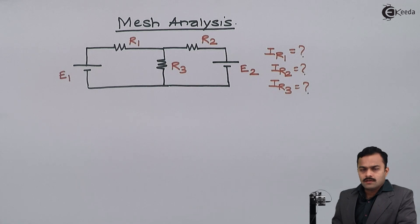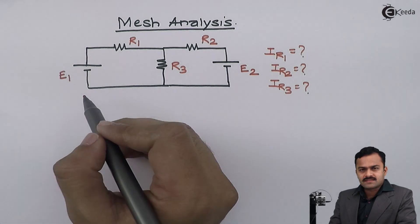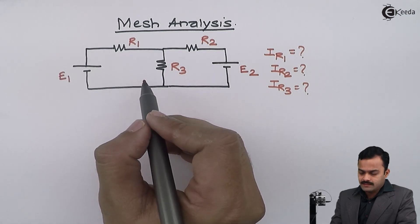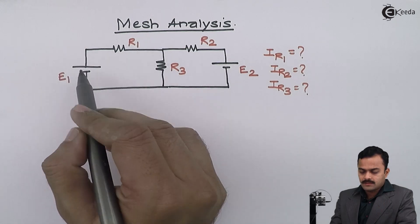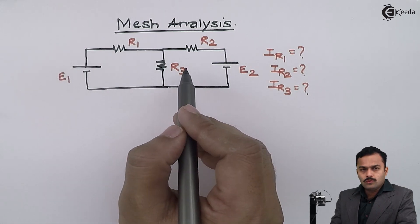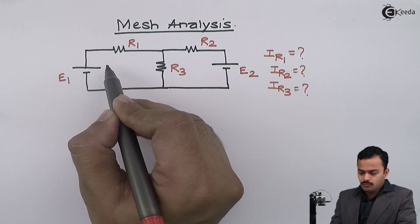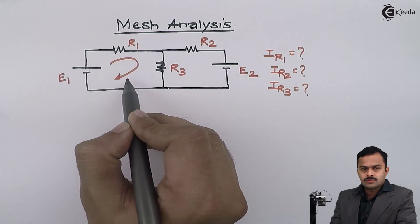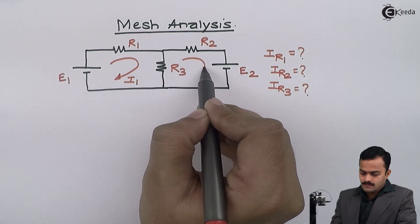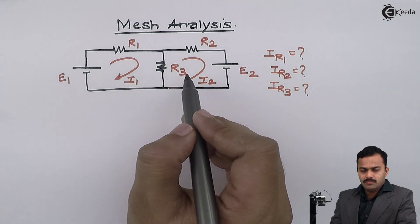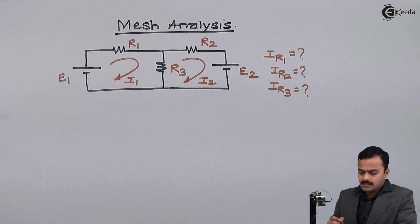To get these values, let's see how we solve this using mesh analysis, which is ultimately an application of Kirchhoff's voltage law. The first step is to consider the number of loops present in the circuit. A loop means a closed path. Here I have two loops. I will mark loop currents in the clockwise direction, so this will be I1 and this will be I2.